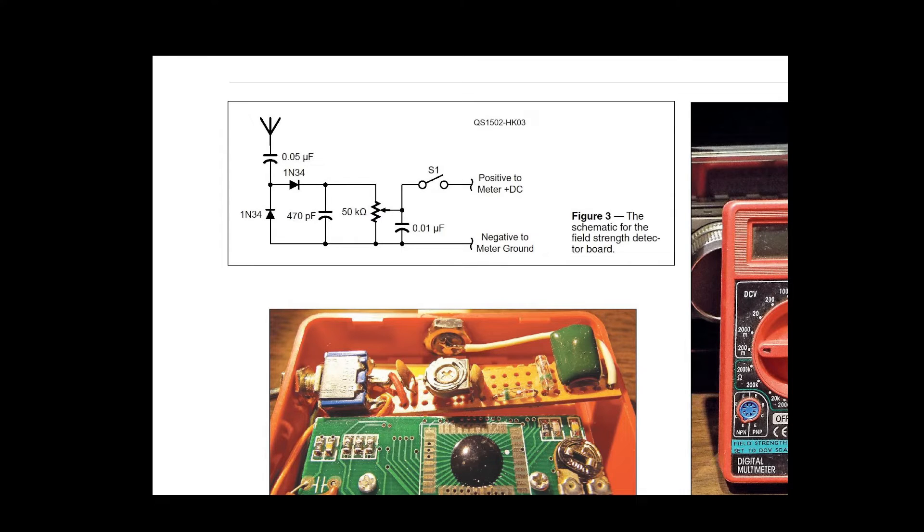470 picofarad capacitor and a 50 kilo ohm potentiometer. Another 0.01 microfarad capacitor. And here on the diagram there is an S1 and that is for a switch. You can see that depicted on the left hand side of the multimeter below.